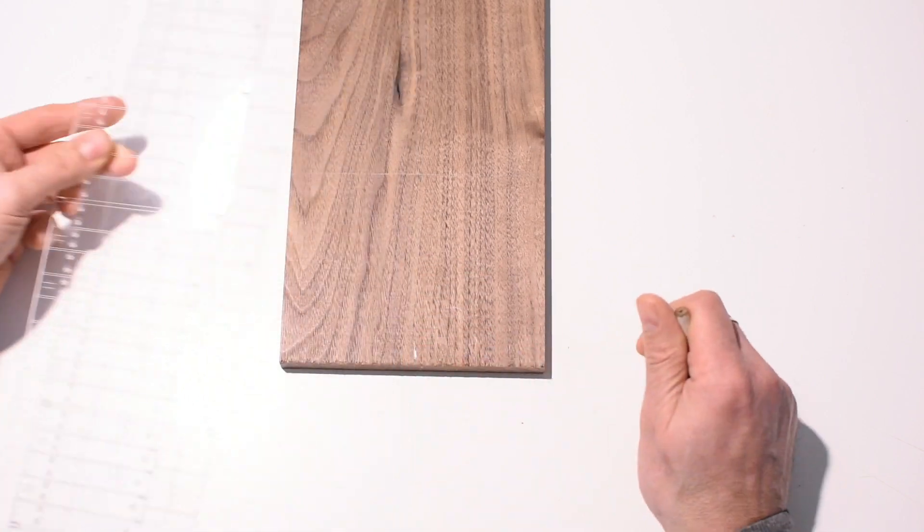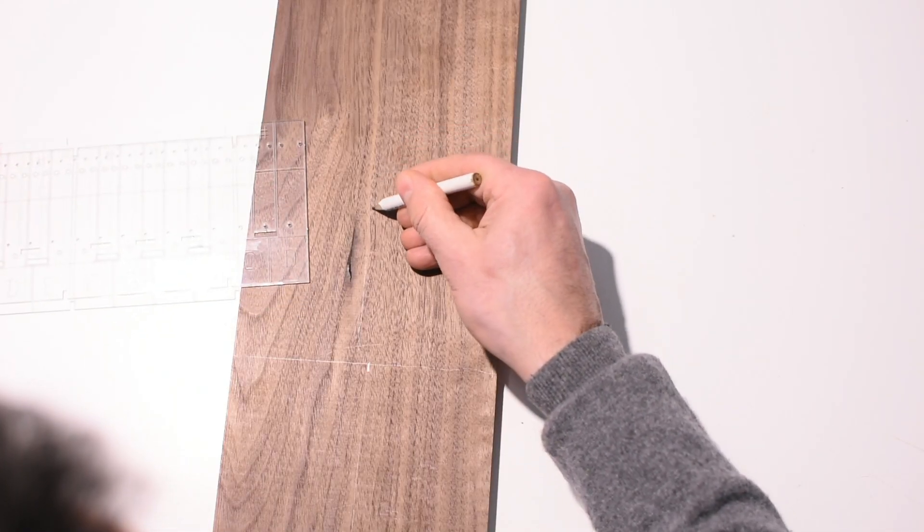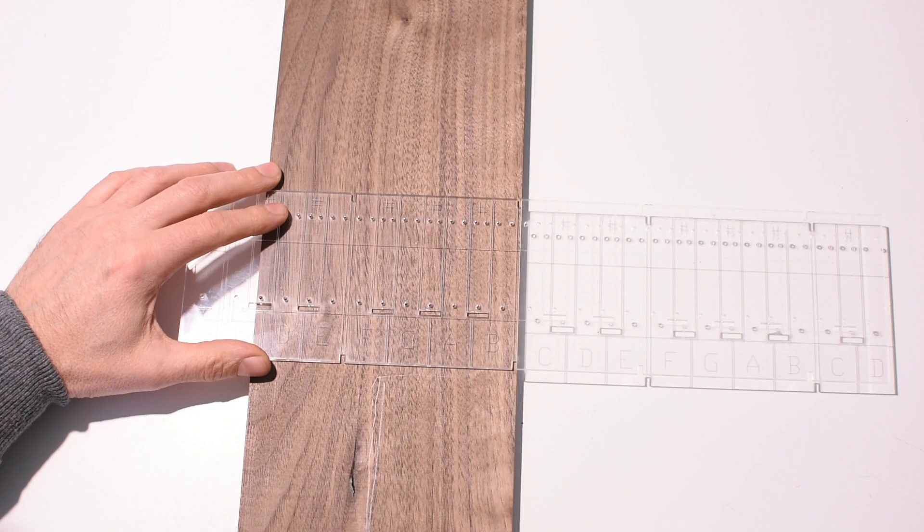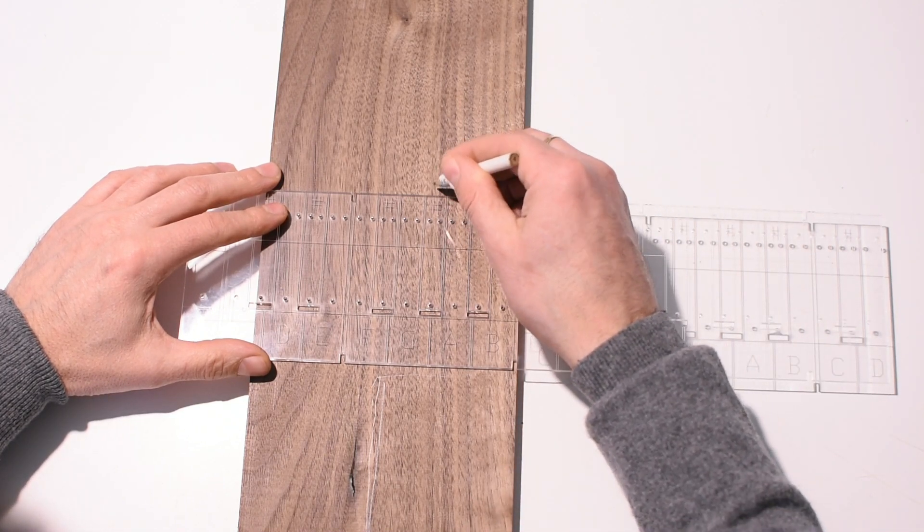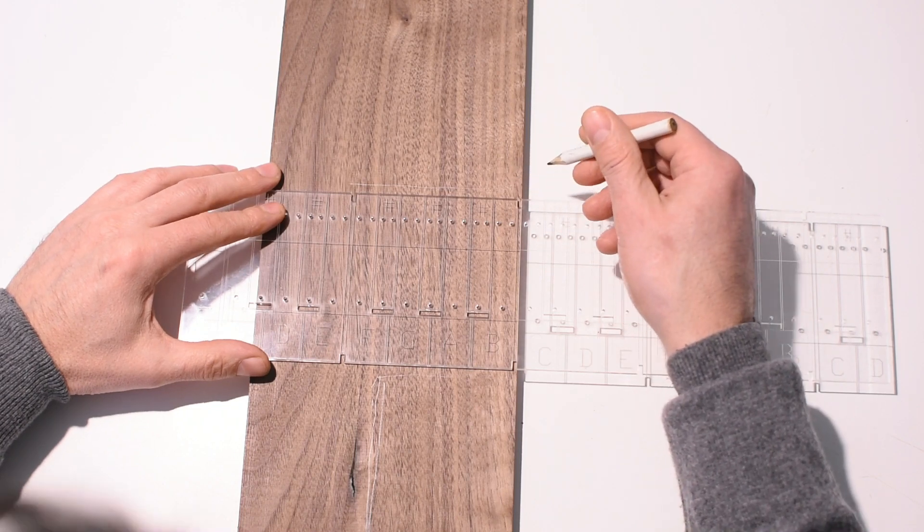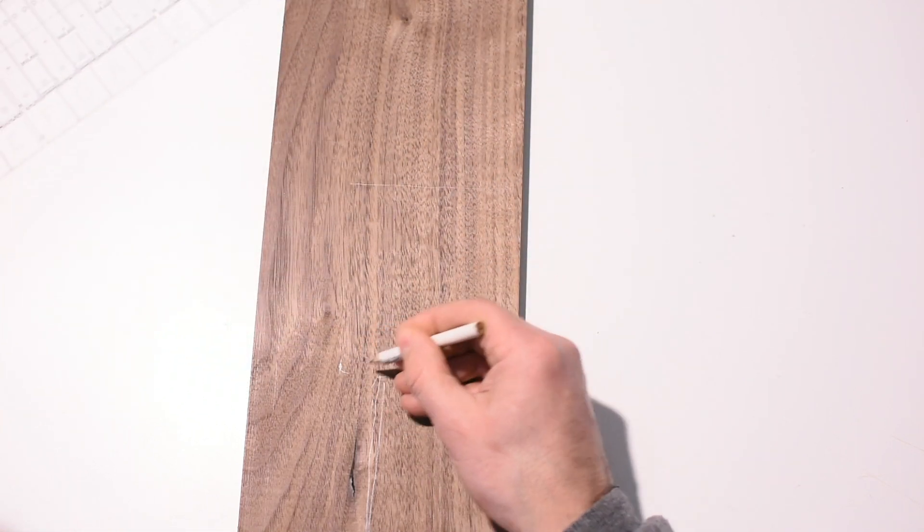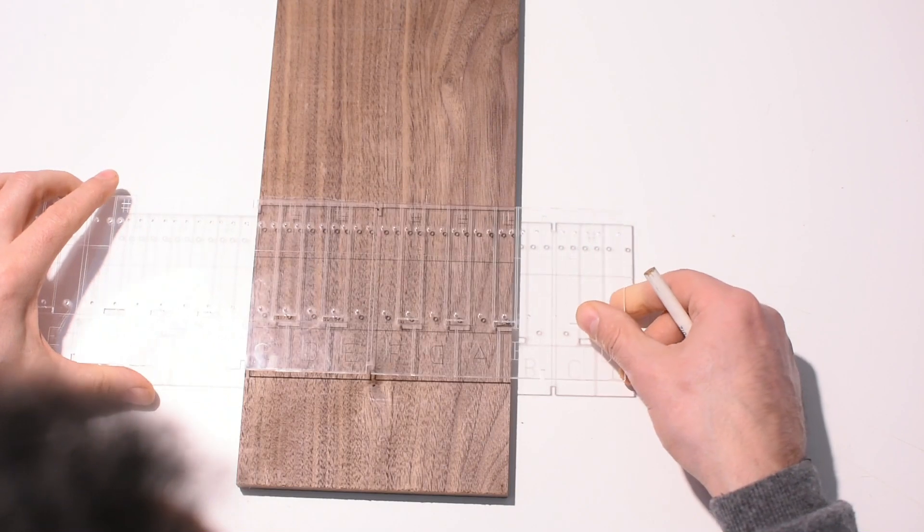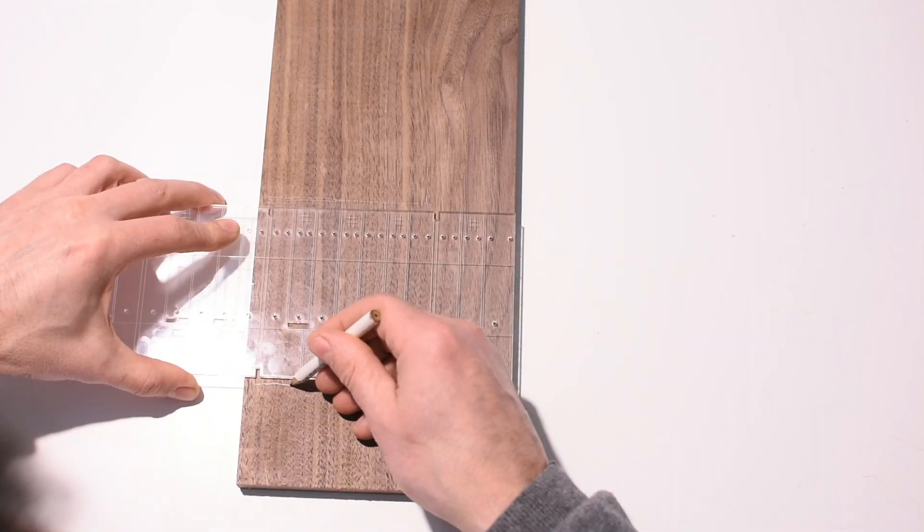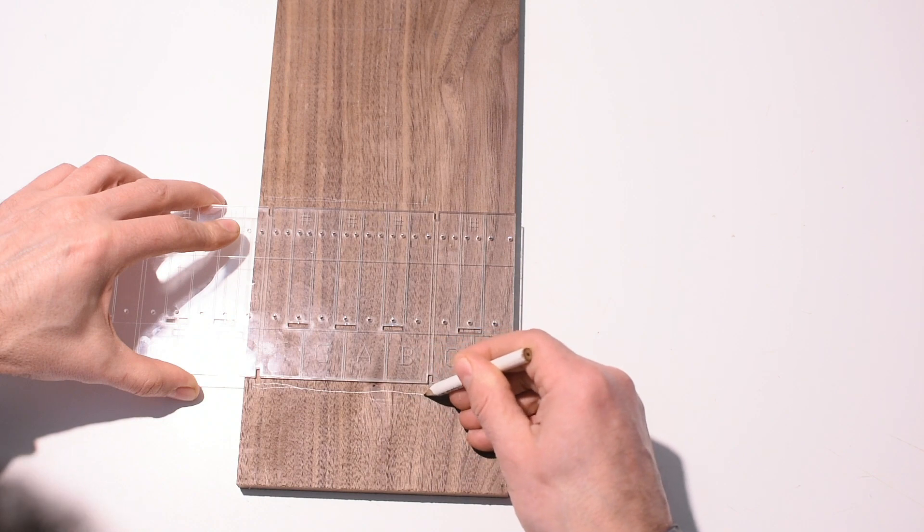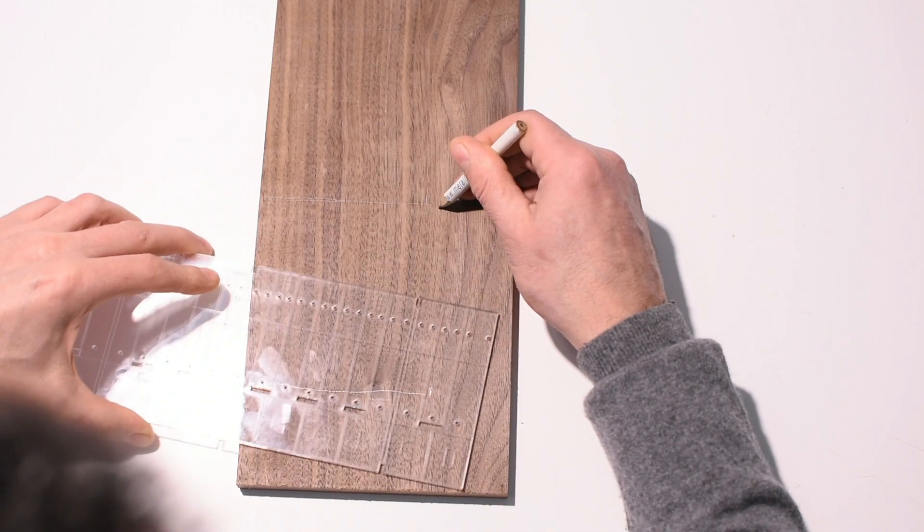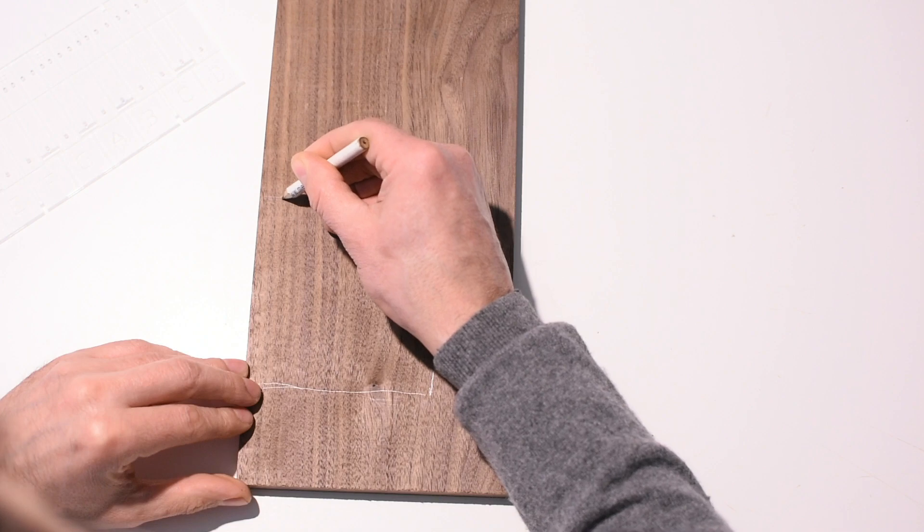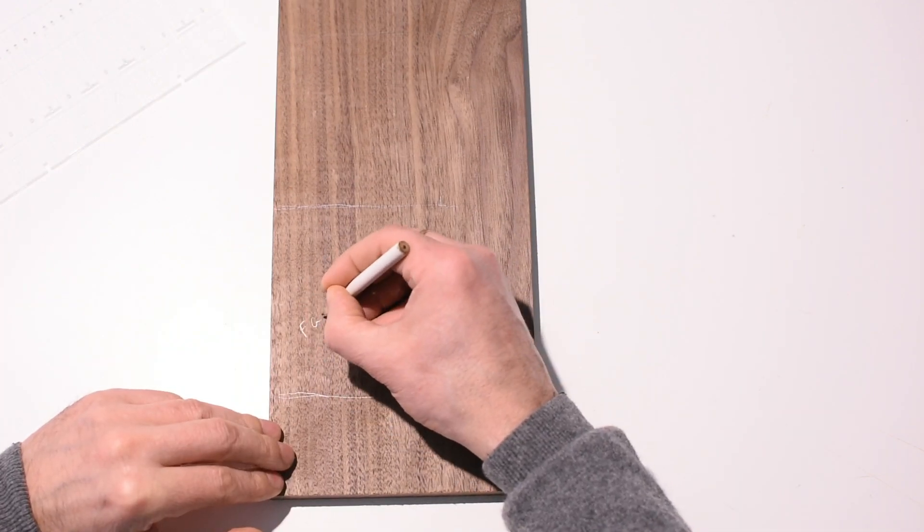Two blocks for notes ranging from C to E, one block for the first B note and the last three notes. One block for notes ranging from F to B. Another same block. I marked them with a pencil.